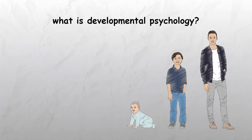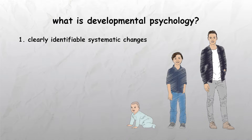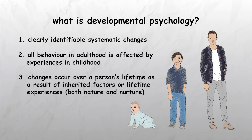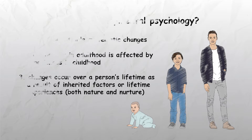Some of the main assumptions of developmental psychology include the following. First, there are clearly identifiable systematic changes that occur in an individual's behaviour from conception to death. Second, all behaviour in adulthood is affected by experiences in childhood. Third, changes occur over a person's lifetime as a result of inherited factors or lifetime experiences arising from both nature and nurture.